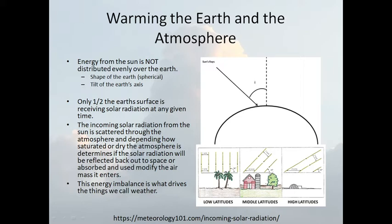Depending on what the ground is like — grass, snow, wet ground, sand — whether that energy is absorbed or reflected back will modify that air mass. In a high pressure system, you have subsidence, just cold air pushing down, keeping the clouds at bay and clear skies. But if the earth is radiating strongly from that energy, you can still get fair weather cumulus clouds and a partly cloudy day. You can have convection in a high pressure system, but chances of rain are slim to none.